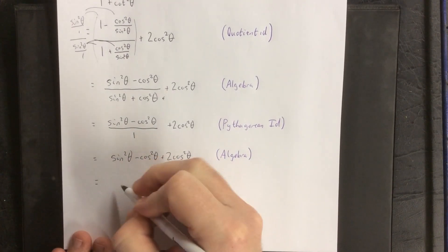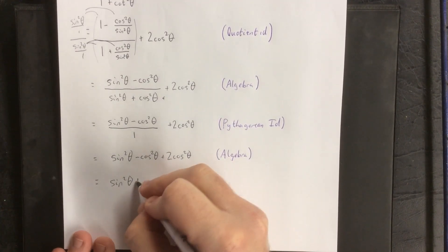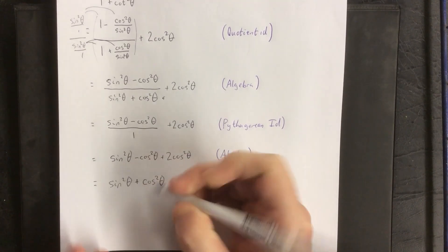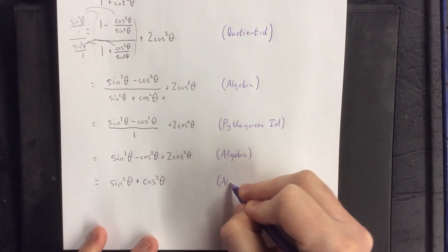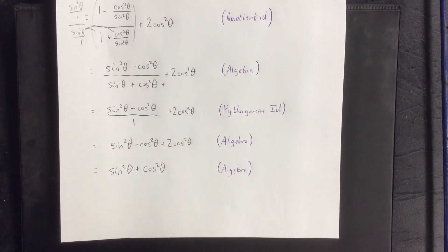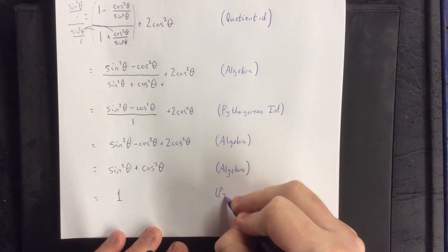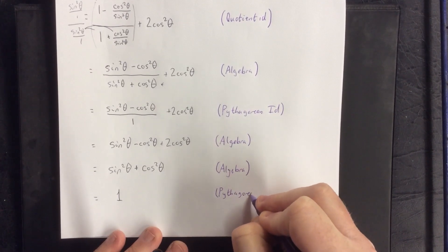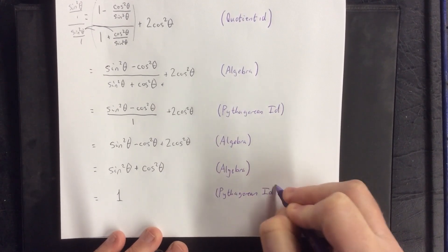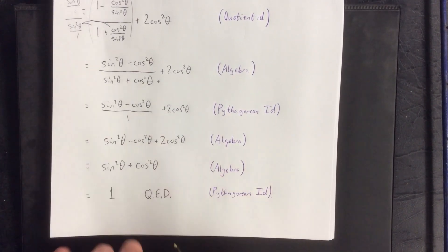There are now like terms we can combine: negative cosine squared theta plus 2 cosine squared theta gives us positive cosine squared theta. That was combining like terms — algebra. Finally, sine squared theta plus cosine squared theta equals 1, justified by the Pythagorean identity. QED — Quod Erat Demonstrandum — roughly translated: 'and thus it is demonstrated.'